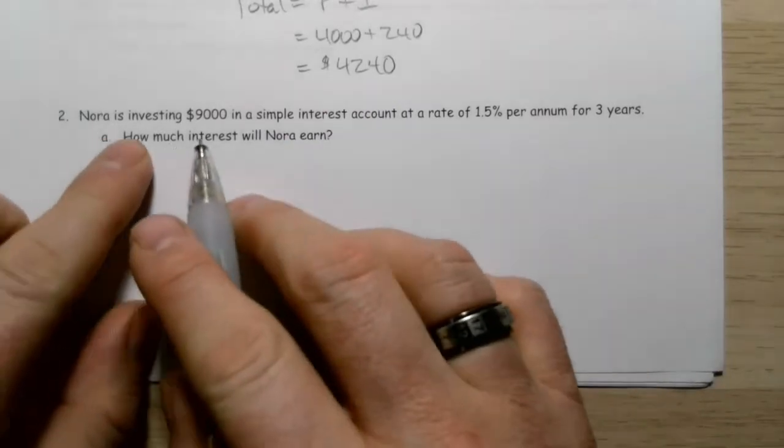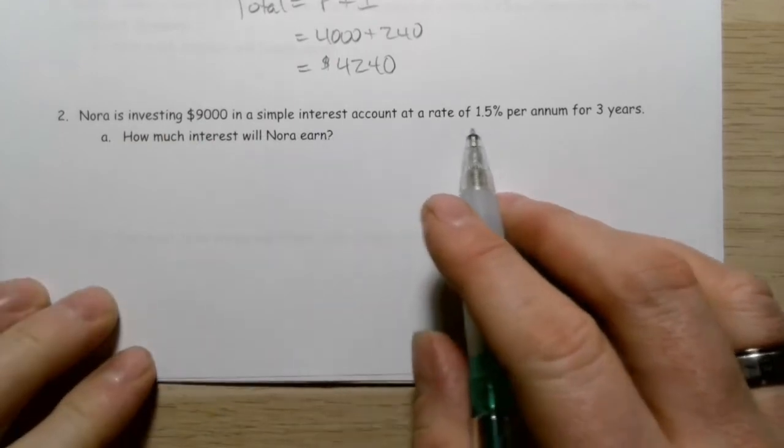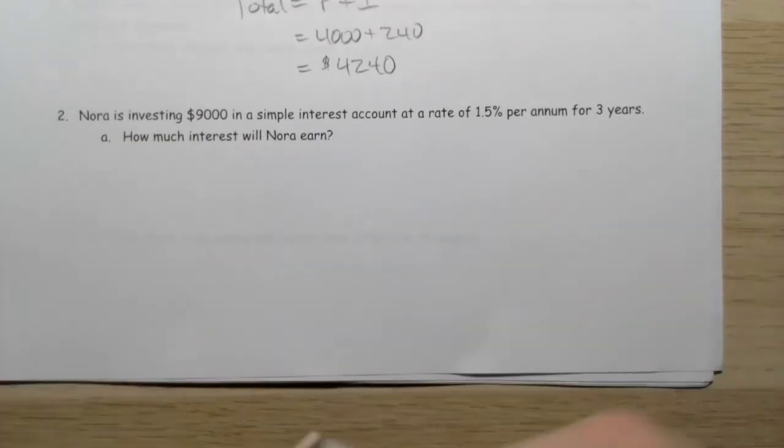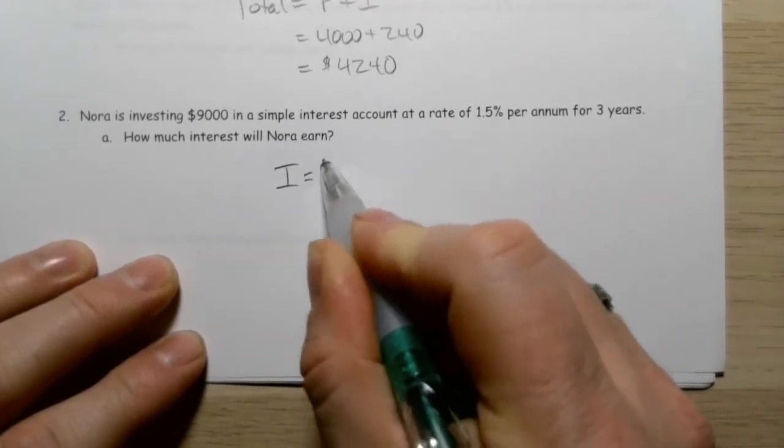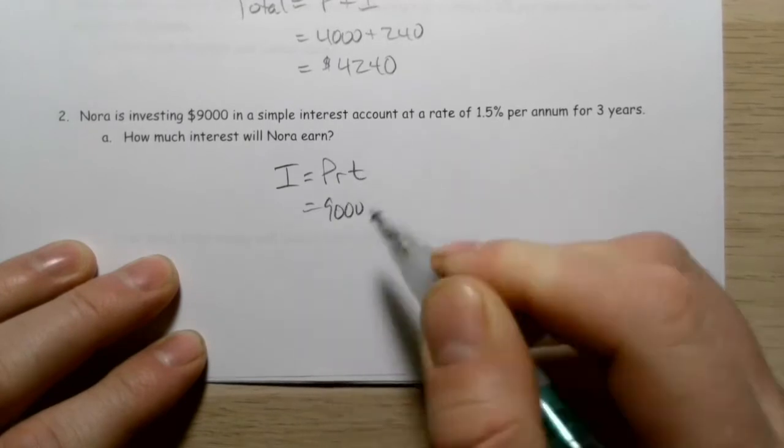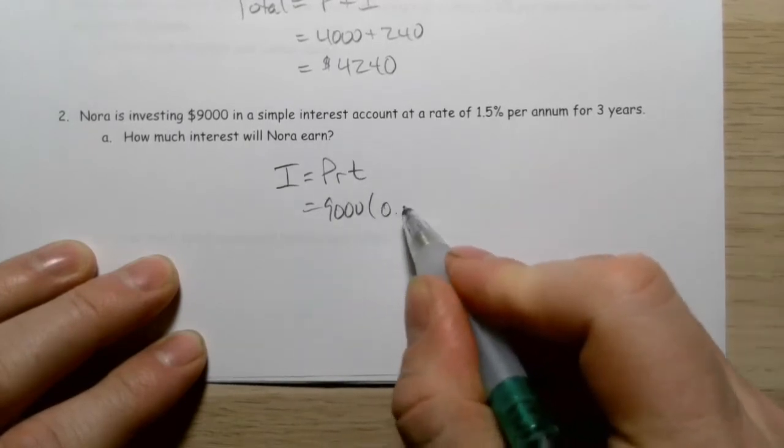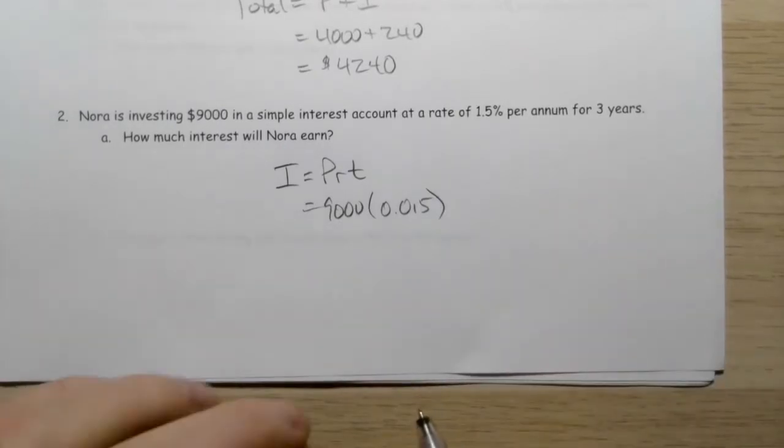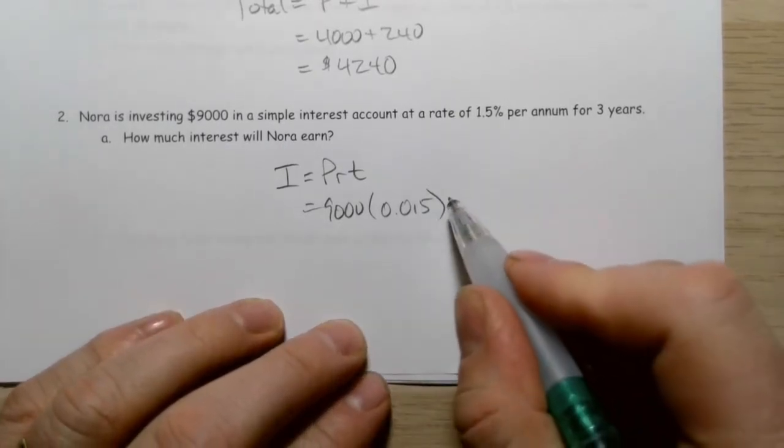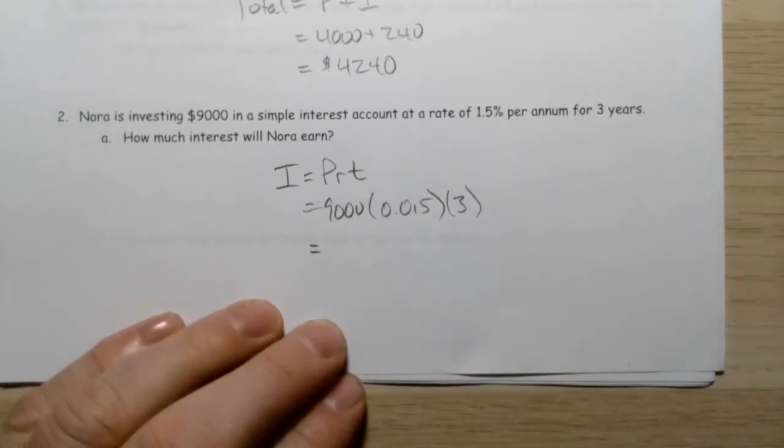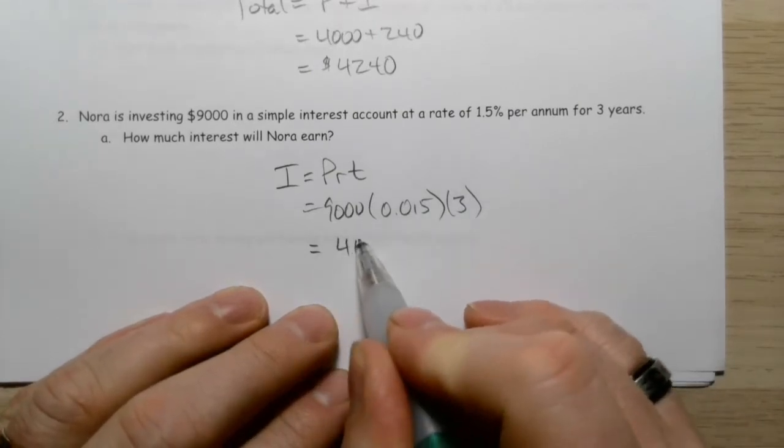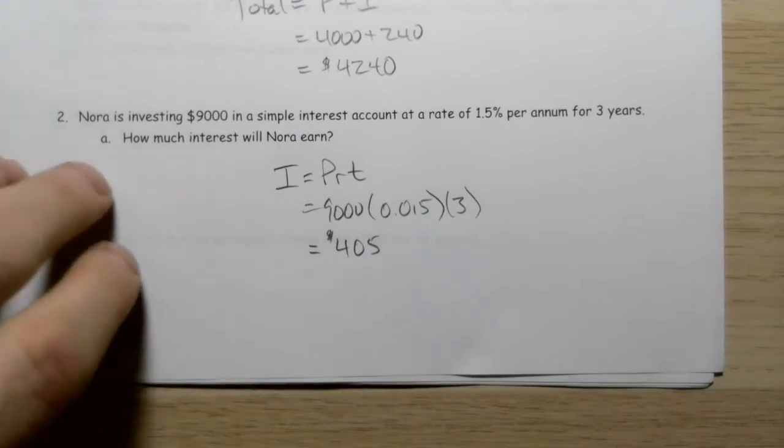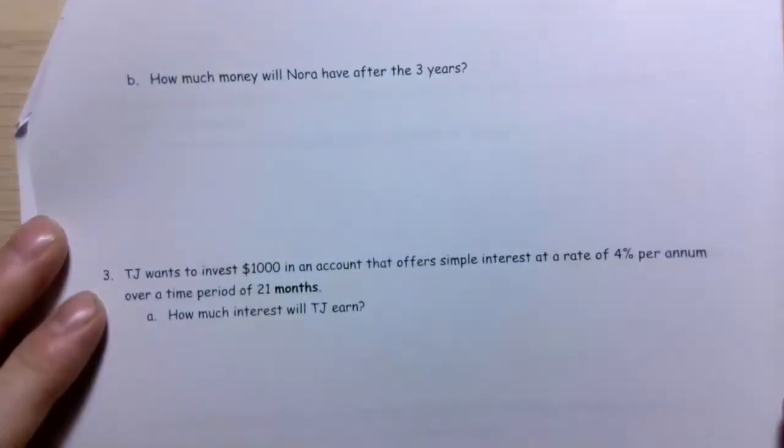In this question, Nora is investing $9,000 in a simple interest account at a rate of 1.5% per annum for three years. How much interest will she earn? Interest is PRT, so $9,000 multiplied by 0.015, multiplied by three. That gets us $405. She would earn $405 for leaving that money in the account.